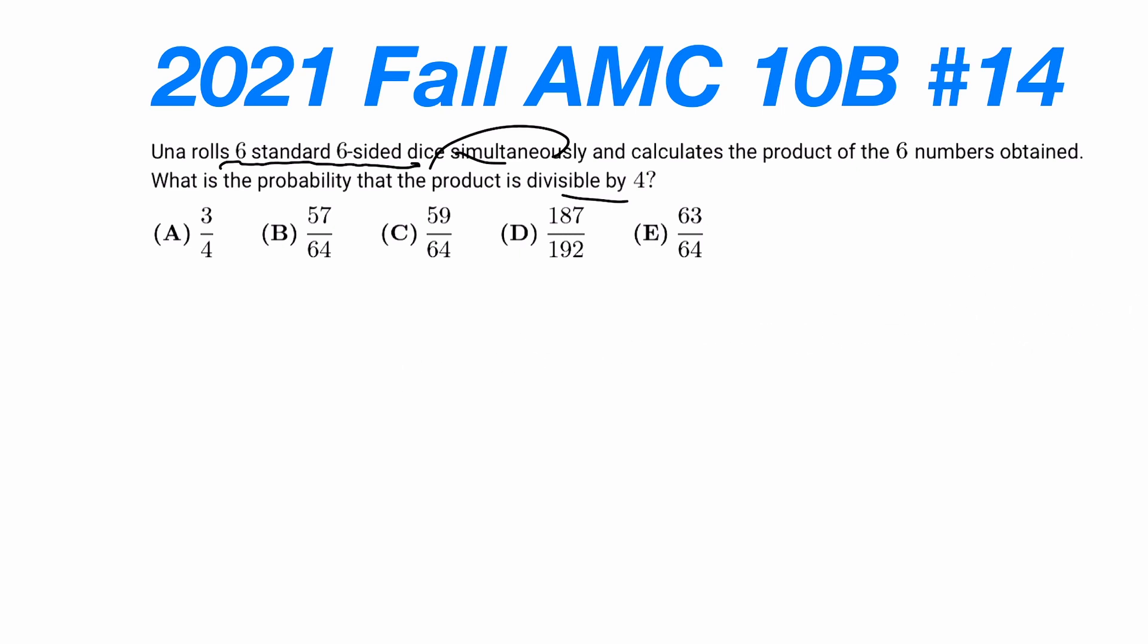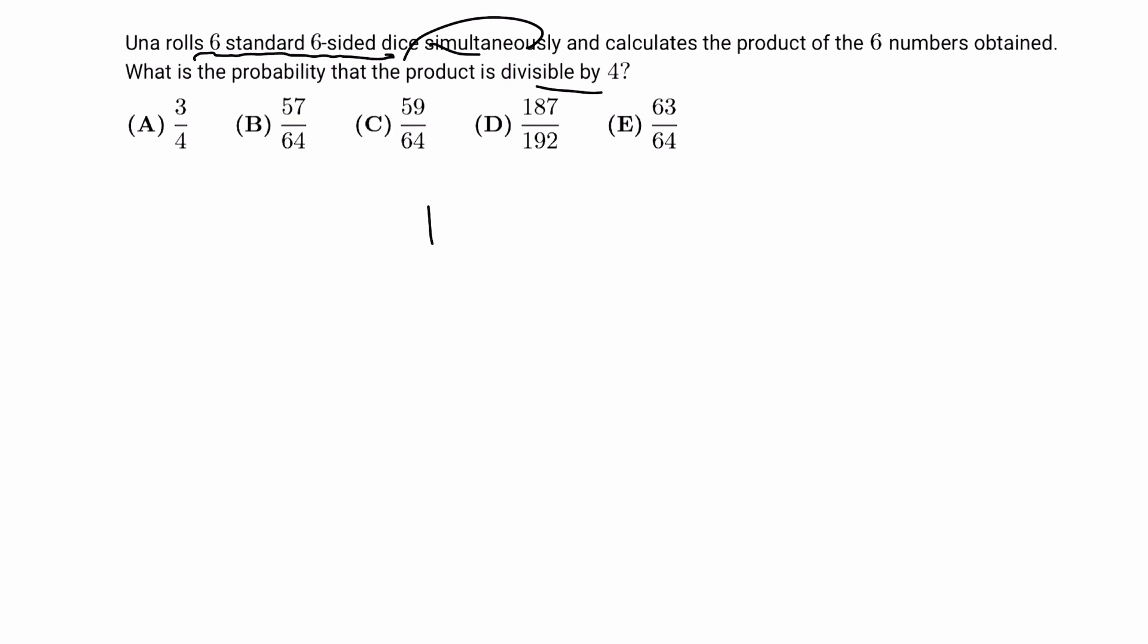Let's say it does not divide two at all, so it just divides one, or it simply divides two and does not divide four. If it's an odd number, then every single roll has to be odd. So that would be three-sixths to the sixth power, or one-half to the sixth power, which we get to be 1 over 64.